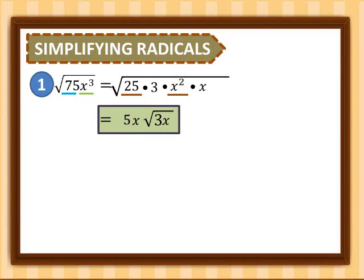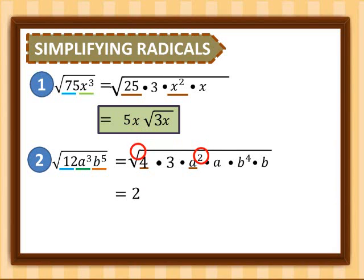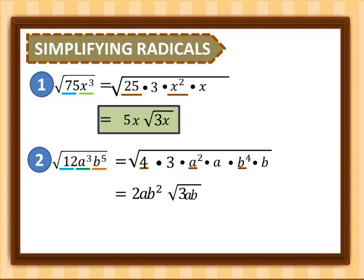Second example: square root of 12a cubed b to the 5th. Factor 12 as 4 times 3, a cubed as a squared times a, and b to the 5th as b to the 4th times b. Square root of 4 is 2; square root of a squared gives exponent 1 (2 ÷ 2), giving a; square root of b to the 4th gives exponent 2 (4 ÷ 2), giving b squared. We leave 3, a, and b inside the radical. So for number 2, we have 2ab squared times square root of 3ab.